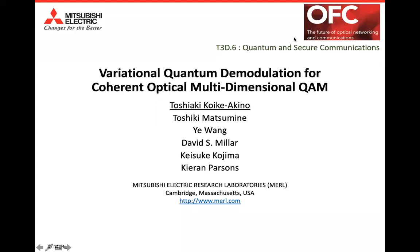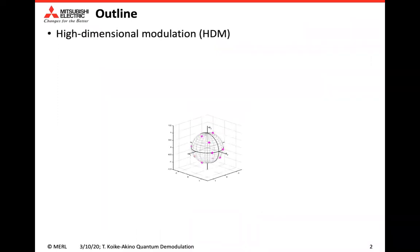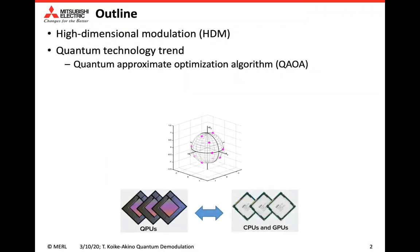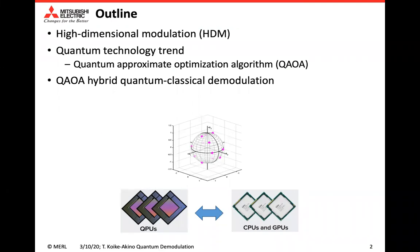Today, I'd like to talk about the new quantum algorithm to demodulate high-dimensional modulation. My name is Toshiyaki Koyuki-Akino at MAO Mitsubishi Electric Research Lab. First, I'll talk about what high-dimensional modulation is. Then we talk about the new trend of quantum technology. By focusing on QAOA — the quantum approximate optimization algorithm — we propose a new demodulation method which uses both quantum and classical chips. We show some results in simulation and on real quantum chips.